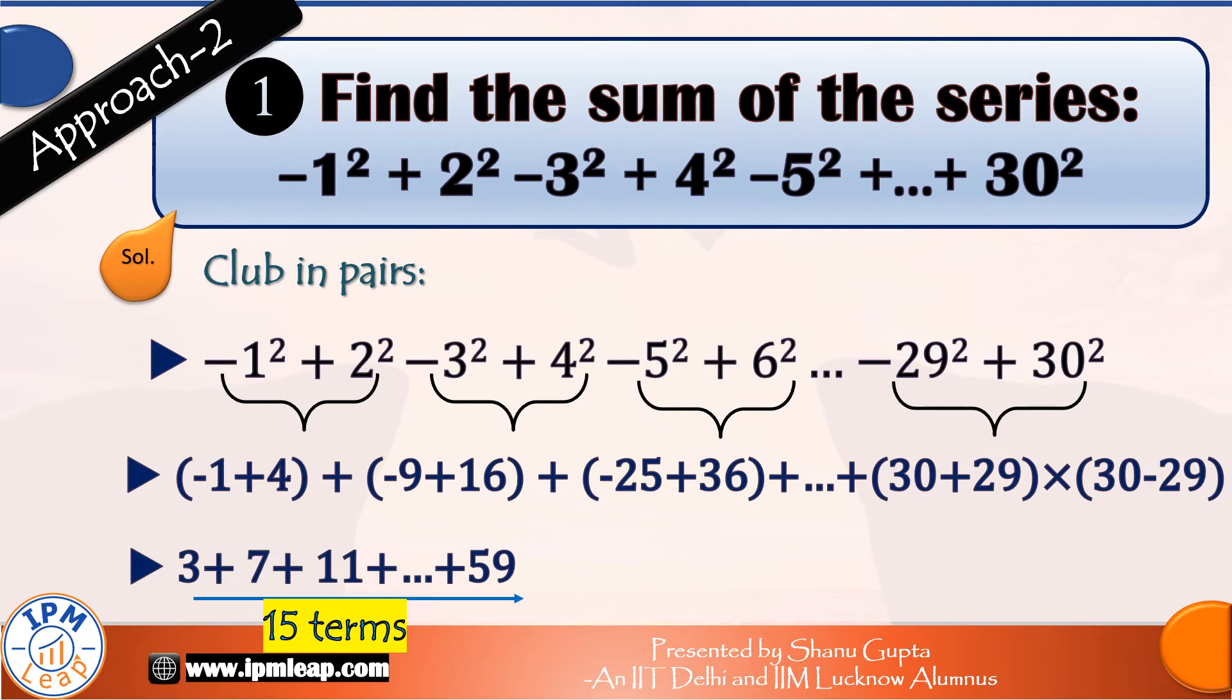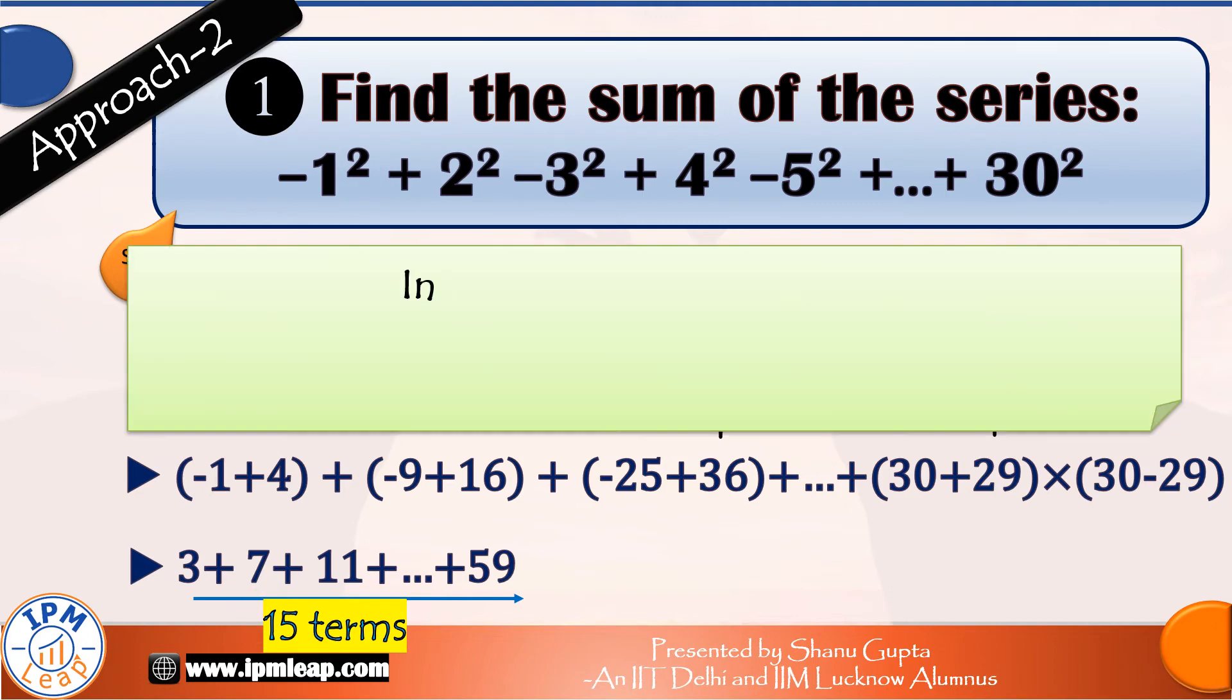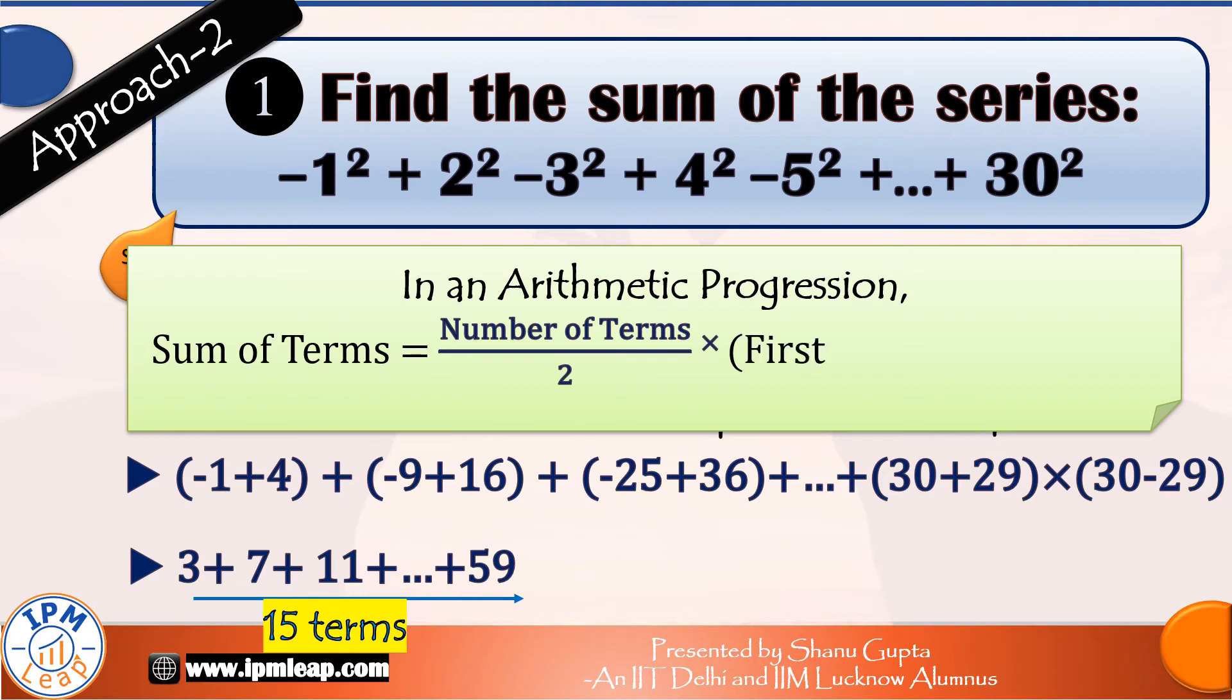So in this AP, how many terms do we have? Well, originally there were 30 terms, and we combined them into pairs, so now the number of terms would be half of 30, that is 15 terms. Next we have to just apply the formula of sum of terms for an arithmetic progression.